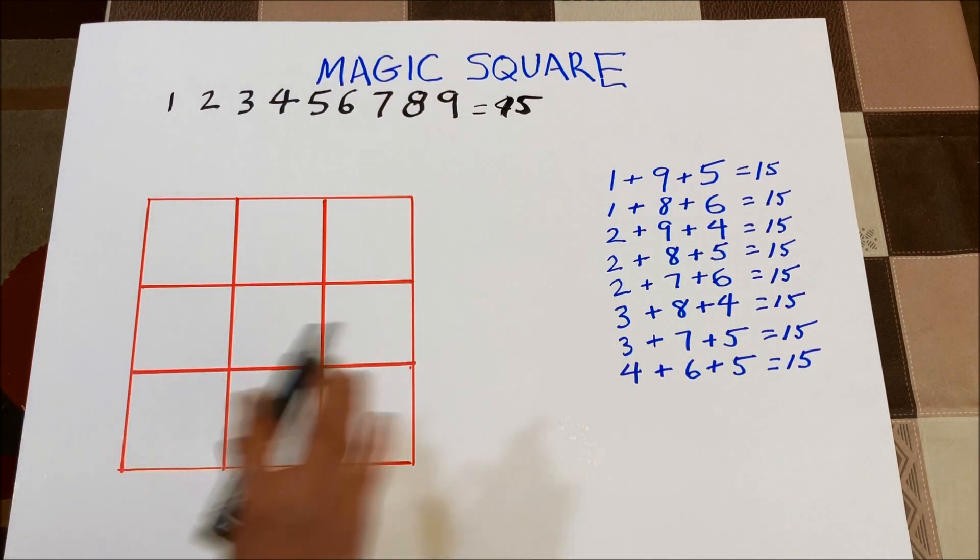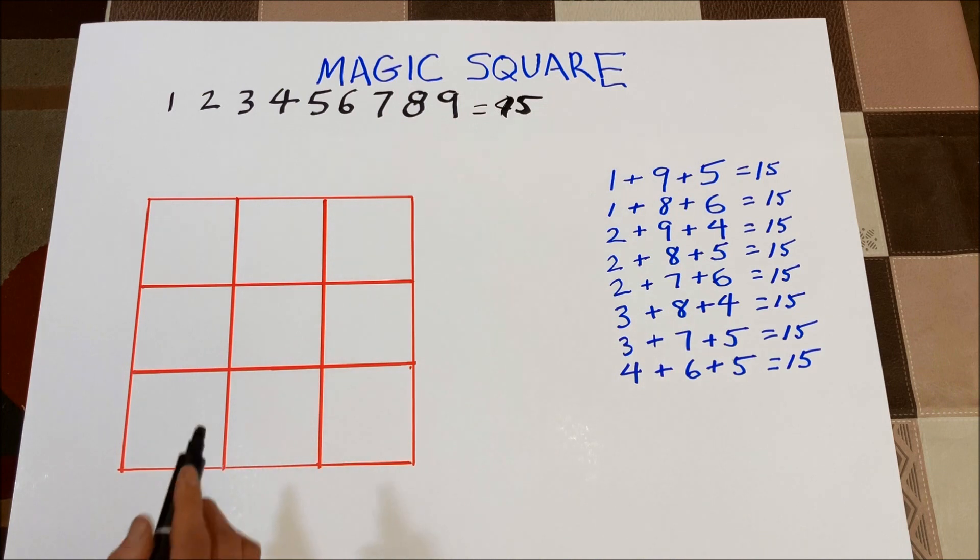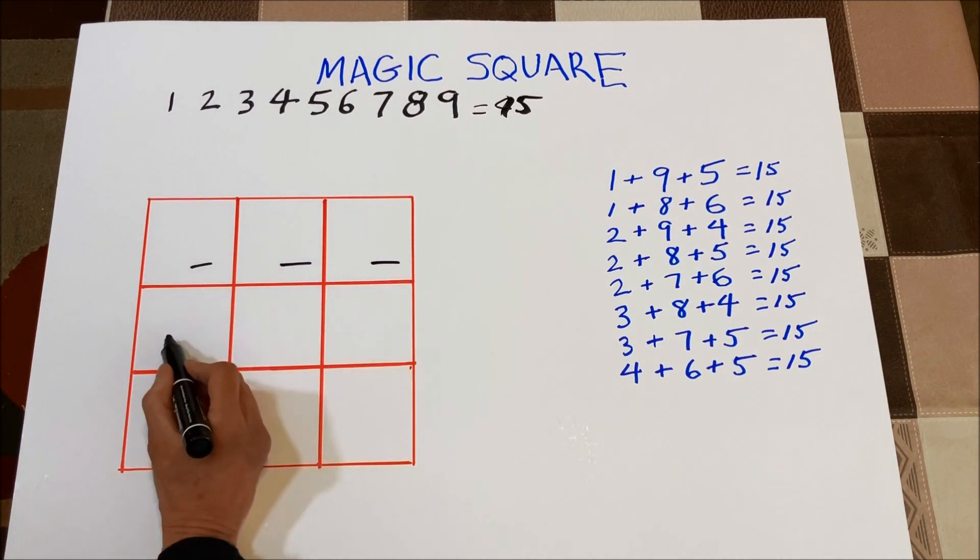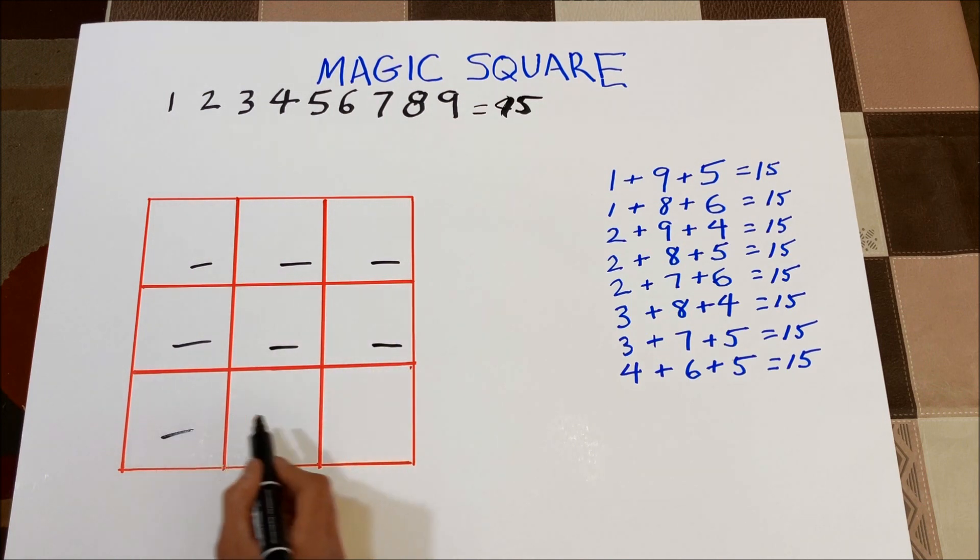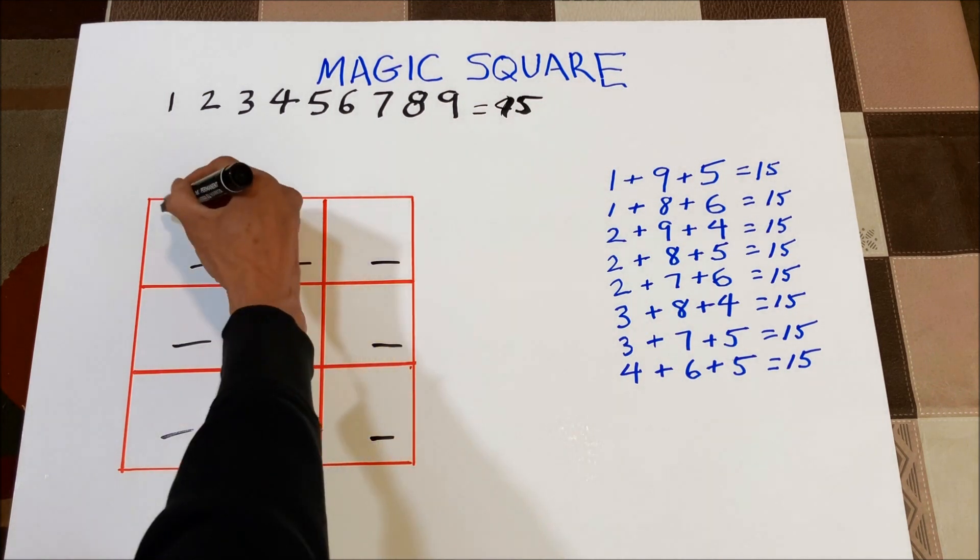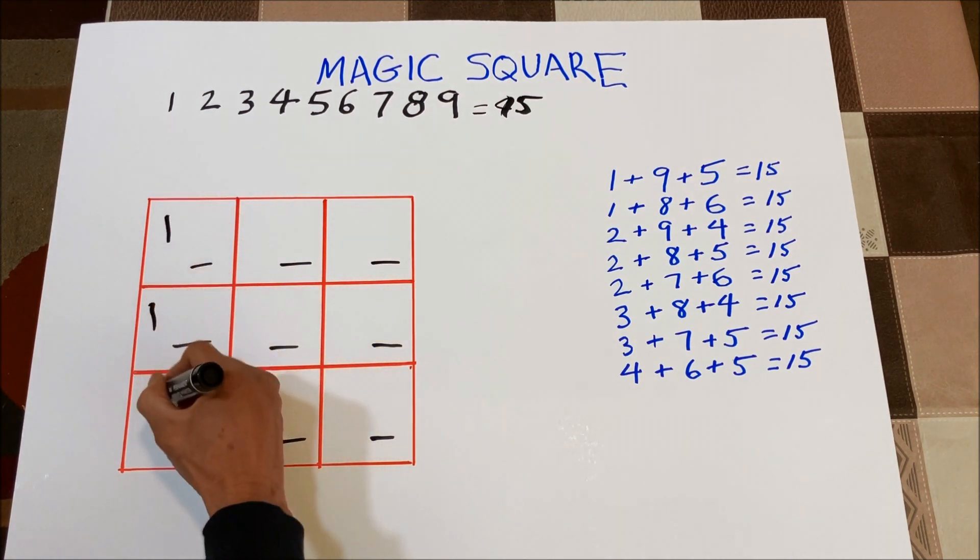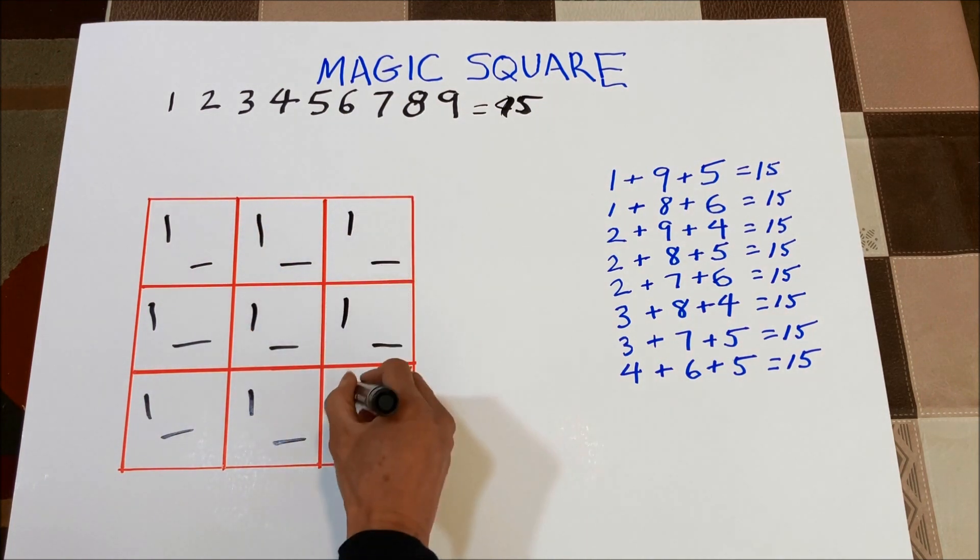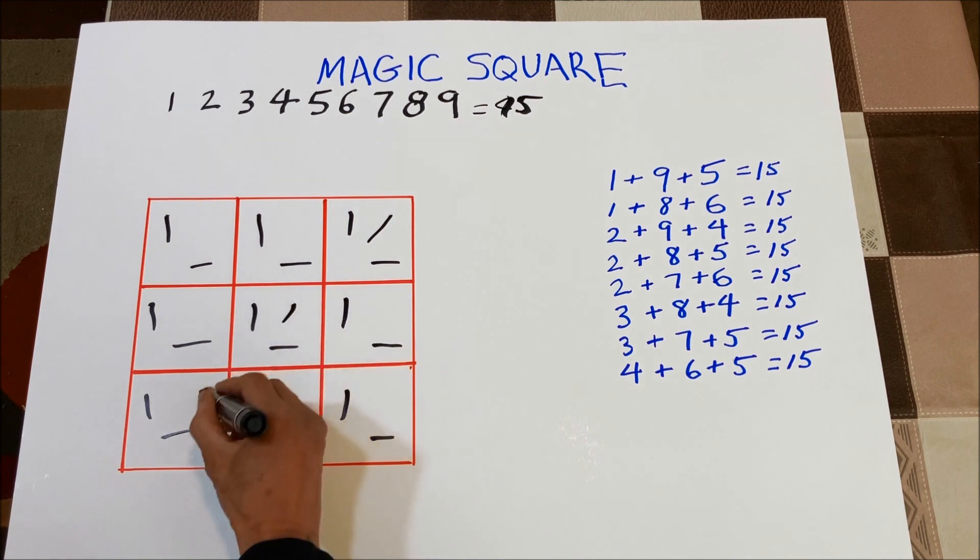So how do we know what goes in there? Super easy. Horizontally there are three ways to do it, vertically three ways to do it, diagonally two ways to do it.